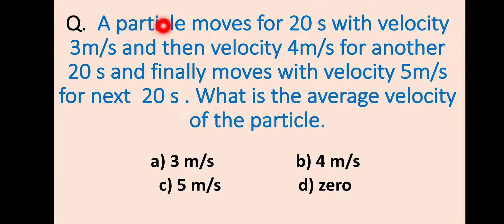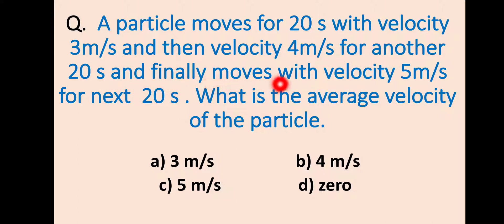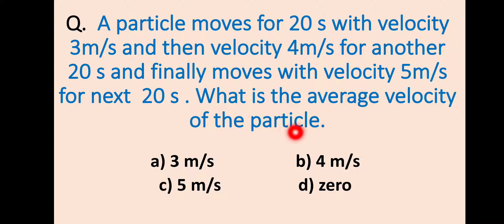A particle moves for 20 seconds with velocity 3 meter per second, then with velocity 4 meter per second for another 20 seconds, and finally moves with velocity 5 meter per second for the next 20 seconds. What is the average velocity of the particle? Options: A. 3 meter per second, B. 4 meter per second, C. 5 meter per second, D. 0.